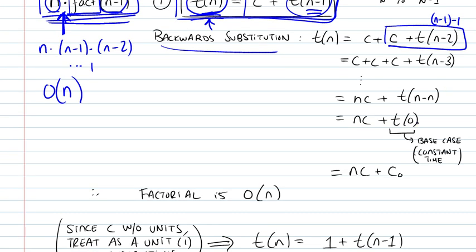Which is n minus n. n minus n is t of 0. And you notice that you would have at that point n times c, so n times constant. If you actually did that backward substitution all the way, you would notice that you would get that.